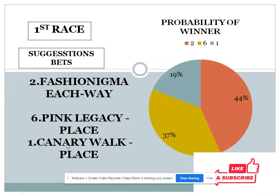If you find the top two choices difference is less than 10 percent, but the gap between the bottom two choices is more than 10 percent, in this condition I personally suggest number six for place in the first race.